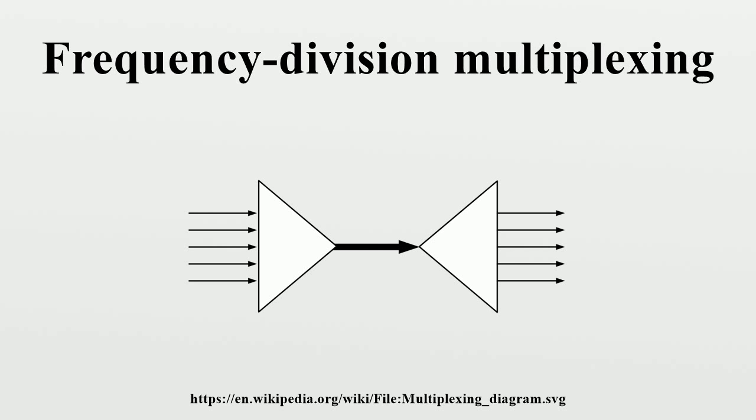Thus the available bandwidth is divided into slots, or channels, each of which can carry a separate modulated signal. For example,